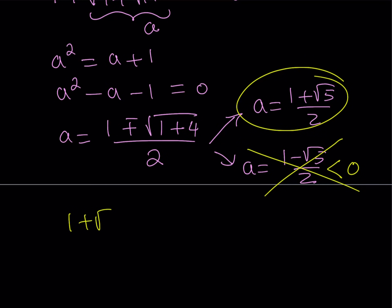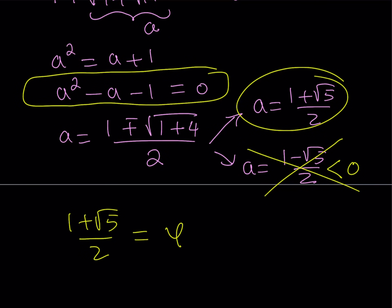So 1 plus root 5 over 2 is known as the golden ratio. We can assign the Greek letter phi to it. Phi is simply an irrational number like pi, but one with many unusual mathematical properties. Unlike pi, which is a transcendental number, phi is an algebraic number — meaning it is the solution to a polynomial equation, which is exactly the quadratic we just found. The golden ratio is one of its solutions.